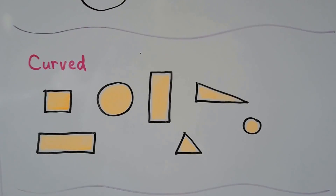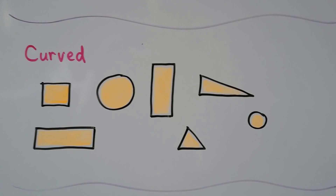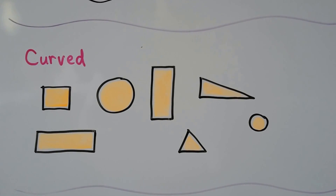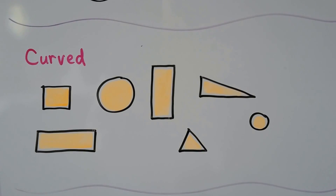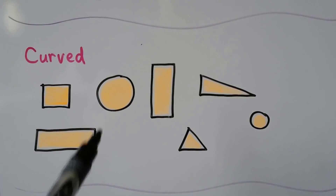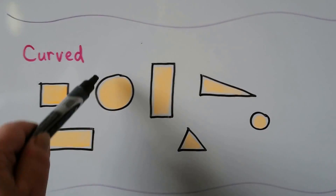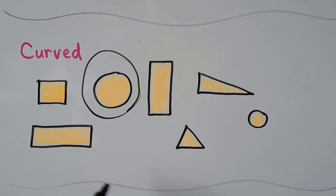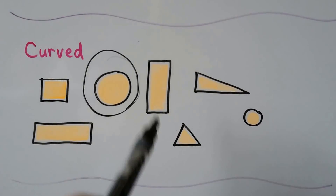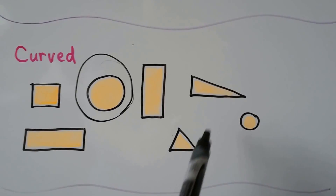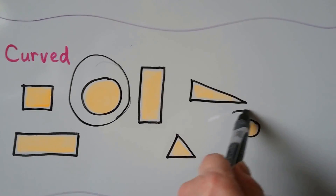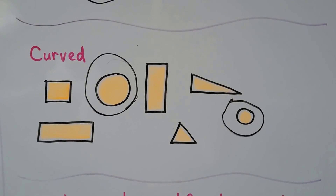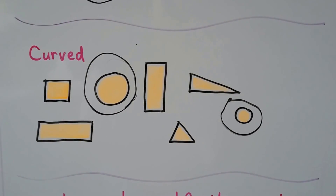This rule says they have to be curved. The circle is curved, so we can circle that one. And the only other one that's curved is this little circle. All the rest have vertices — corners.